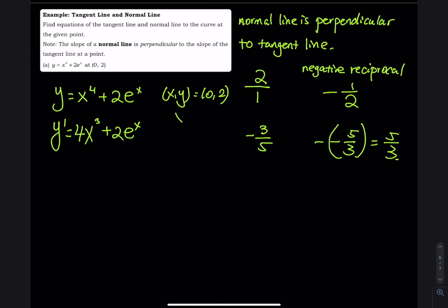So when x is equal to 0, at that point, y prime is 4 times 0 to the 3rd, and then plus 2e^0, so the first one is 0, right? And then e to the 0 power is 1, 2 times 1 is 2, so the slope is equal to 2. That is the slope of the tangent line.